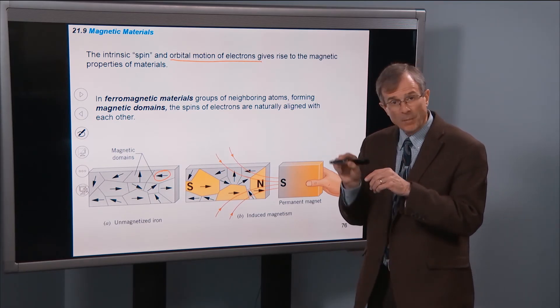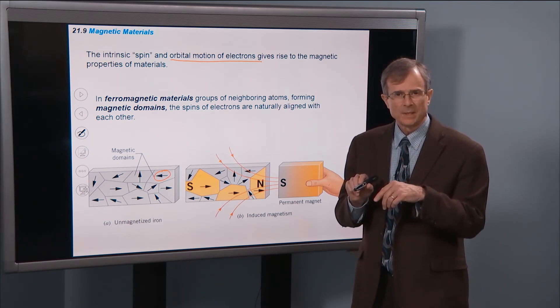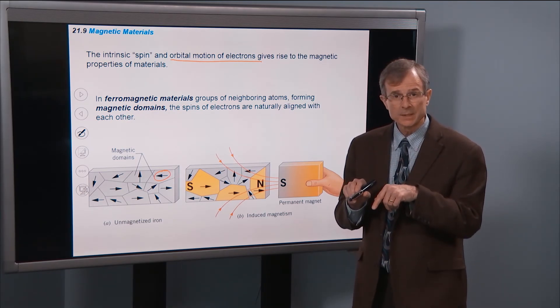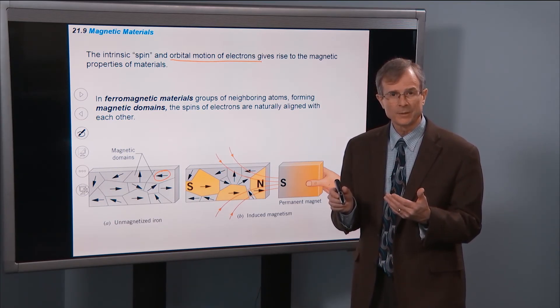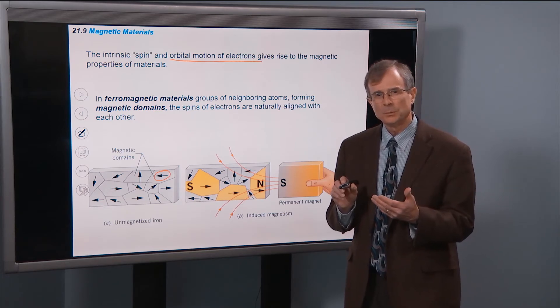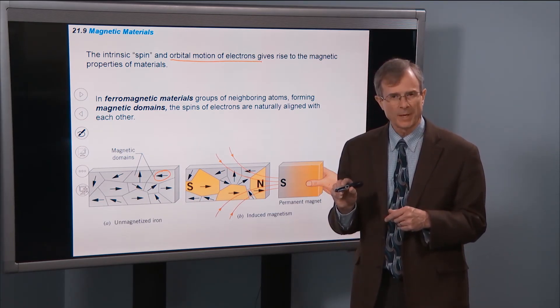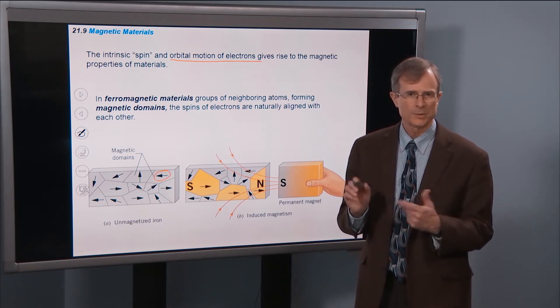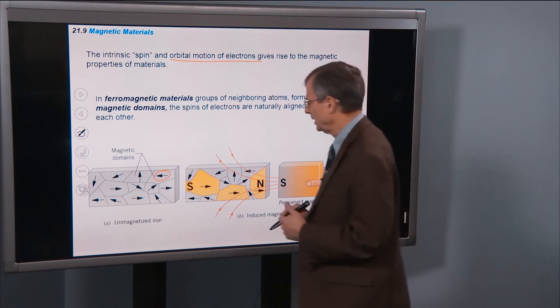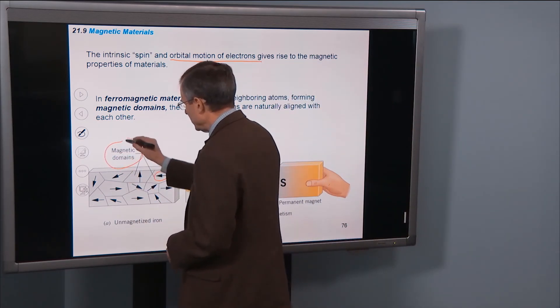And it's that motion of the electrons around the atoms that creates the current element that produces the magnetic field, just like you have with the magnetic field produced by wire in a loop, or in a solenoid that produces that axial field. These magnetic fields, these magnetic domains line up.